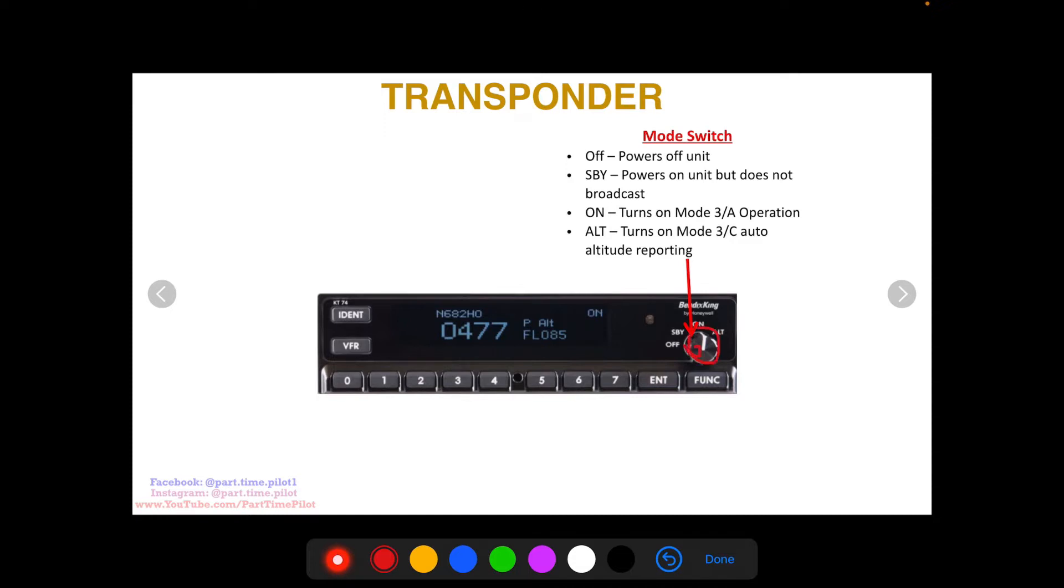Right here you have a basic mode switch. It's got off which powers the unit off, standby which gives power to the unit but it's not broadcasting, on which turns on your mode 3A operation, and alt turns on mode 3C which is automatic altitude reporting.